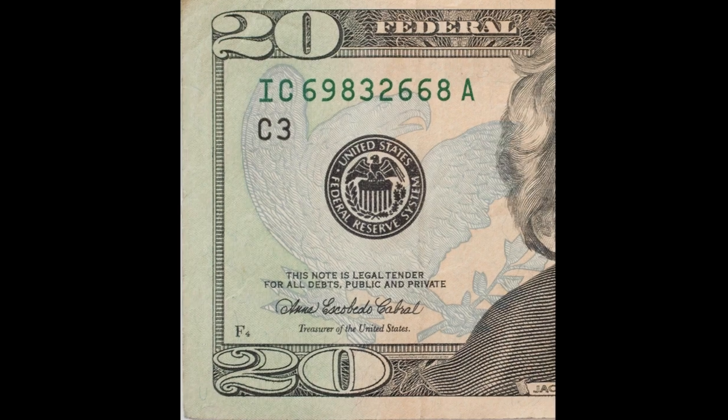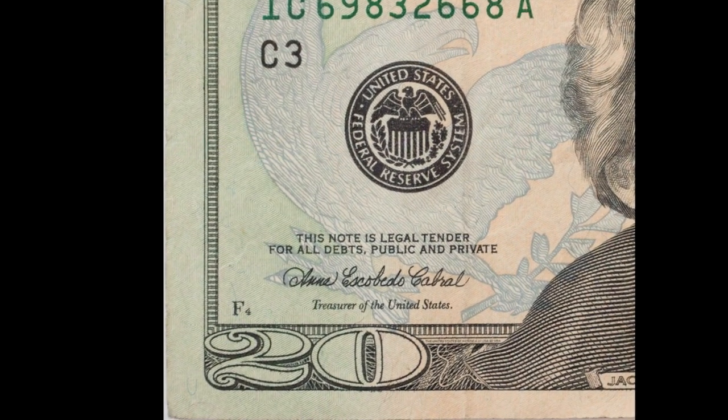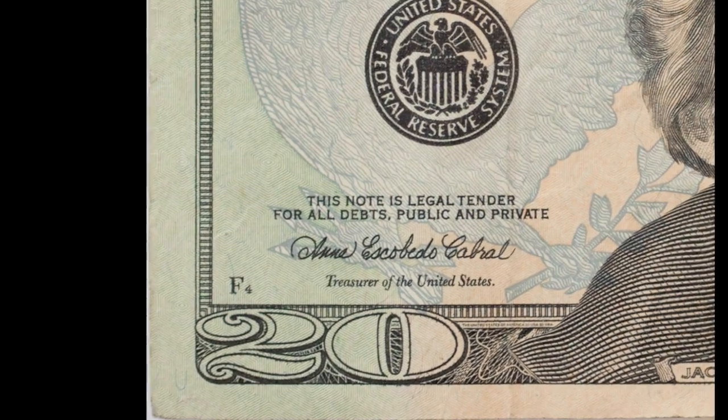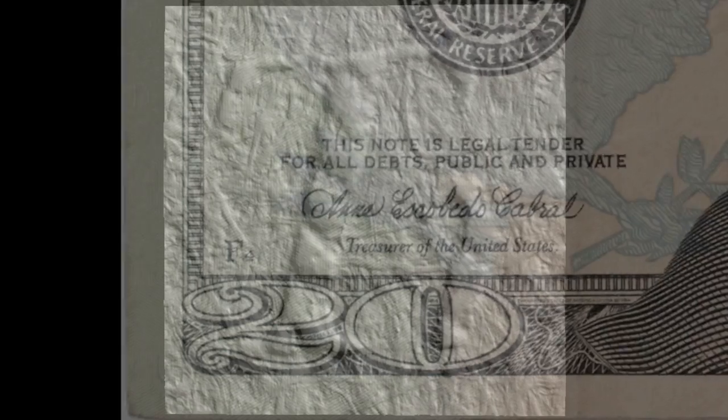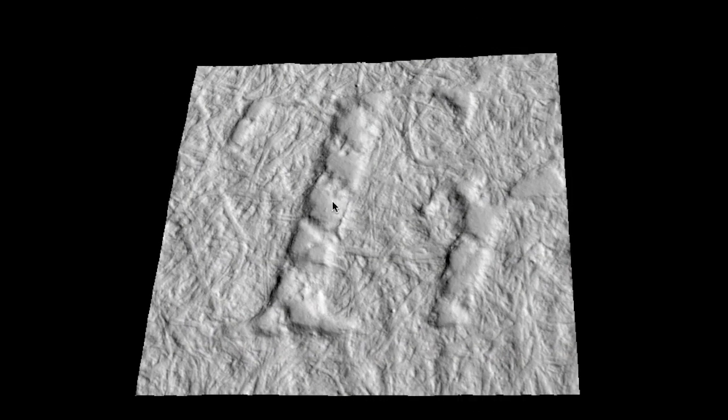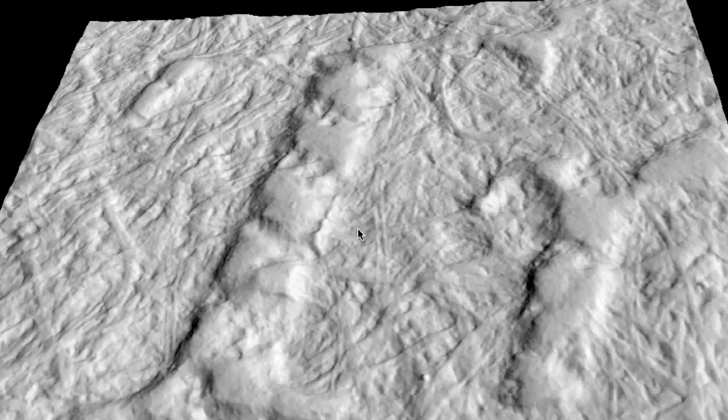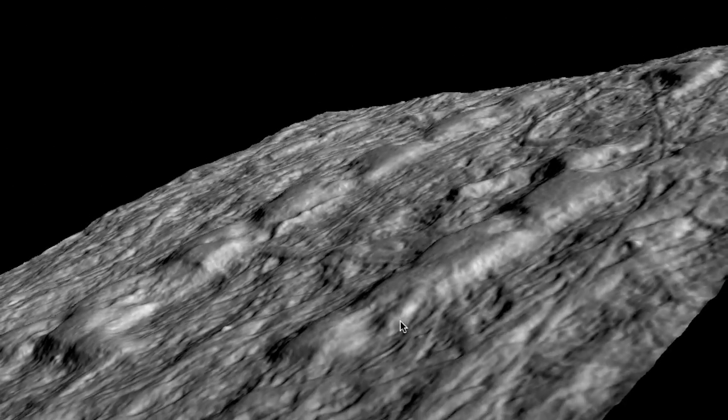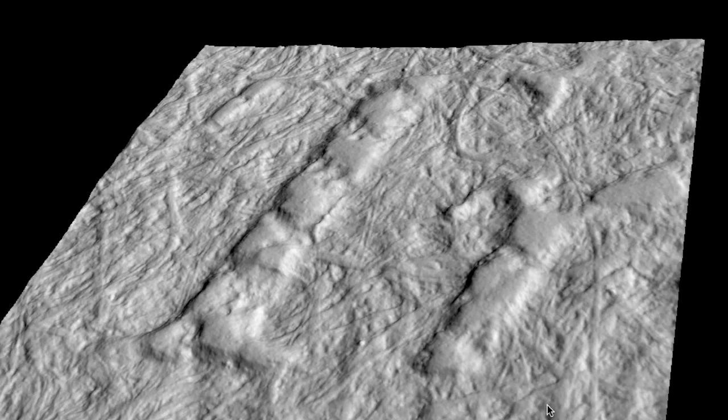GelSight can measure extraordinarily fine detail. Here we measure the letter T of the word Treasurer on a $20 bill. You can see both the raised printing and the fibers of the bill. Currently, we can resolve features as small as 2 microns spatially with submicron depth resolution.